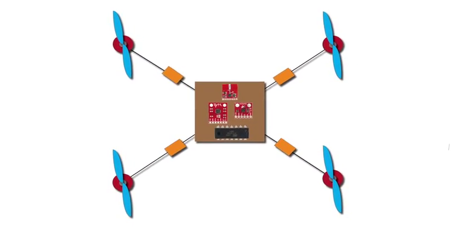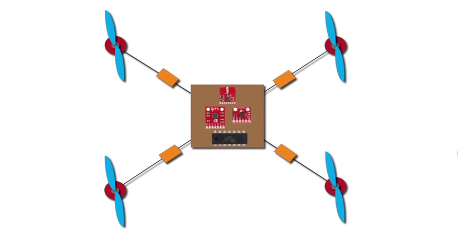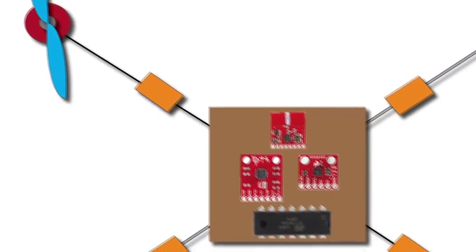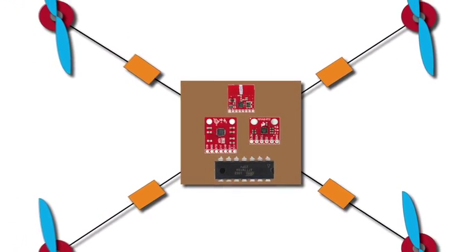Now let's take a look at how a quadcopter actually works. On the hardware side, the important components are the motors, speed controllers, and sensors that are part of the main control board.